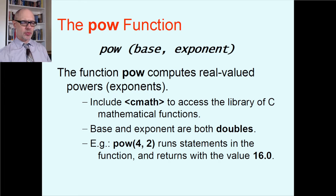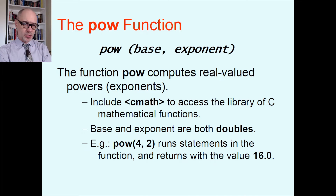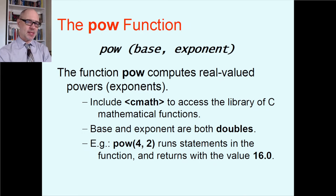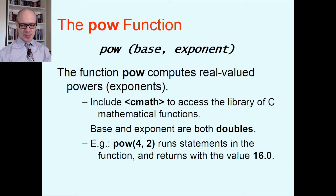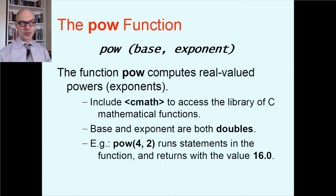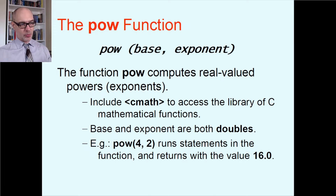In our class, we did one lab where we wanted to compute the area of a circle. Since we didn't know about this yet, we were forced to write pi times radius times radius. So now, if you want to find the square of the radius, you could write pow(radius, 2), and that would do that job.